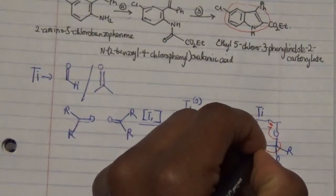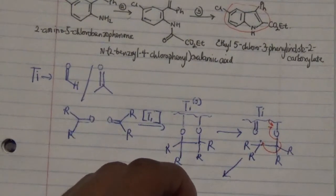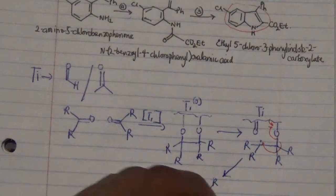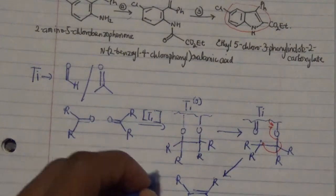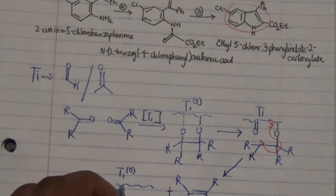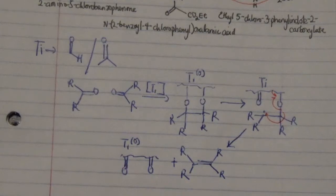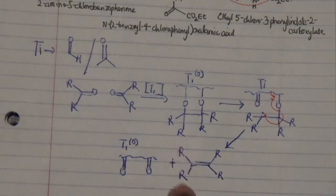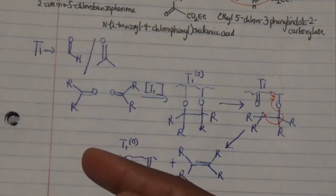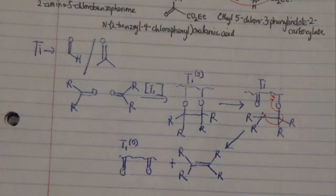One electron reacts with another particular electron to form a double bond between the bulky groups, resulting in titanium with two double-bonded carbons attached to its surface. This McMurray reaction operates under sterically hindered conditions, and titanium 2+ is the species that reacts with esters and ketones to create new carbon-carbon bonds.